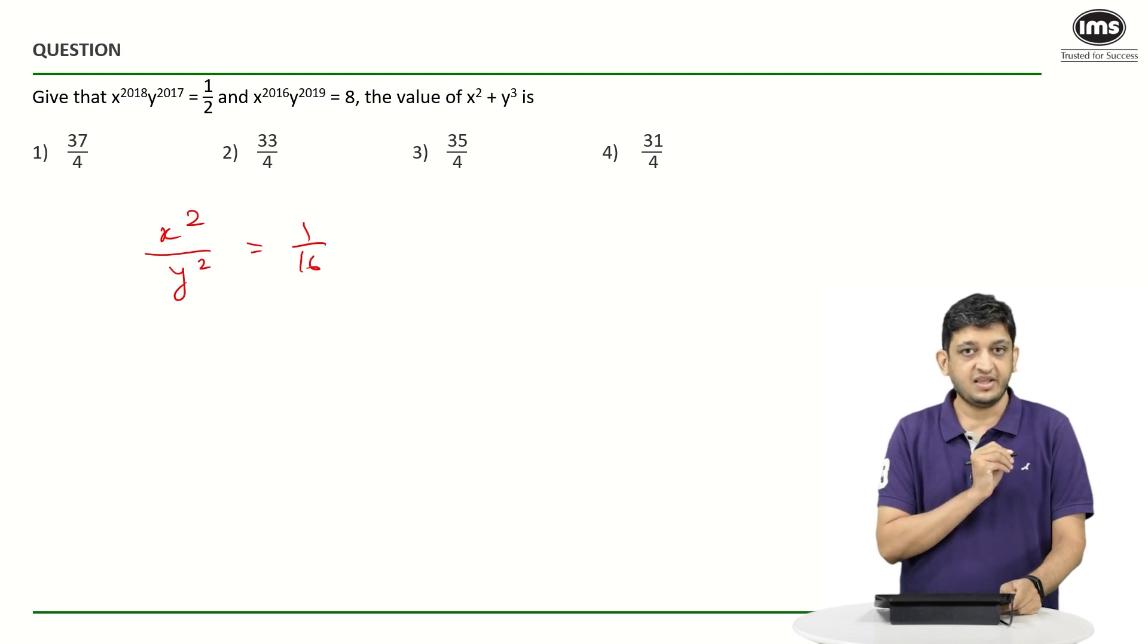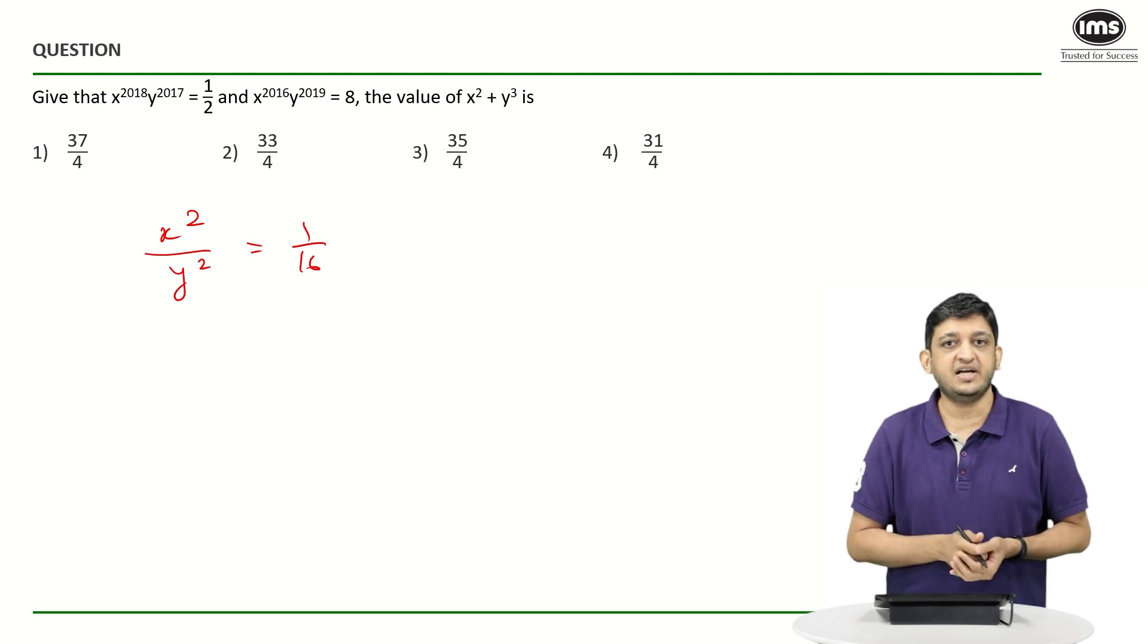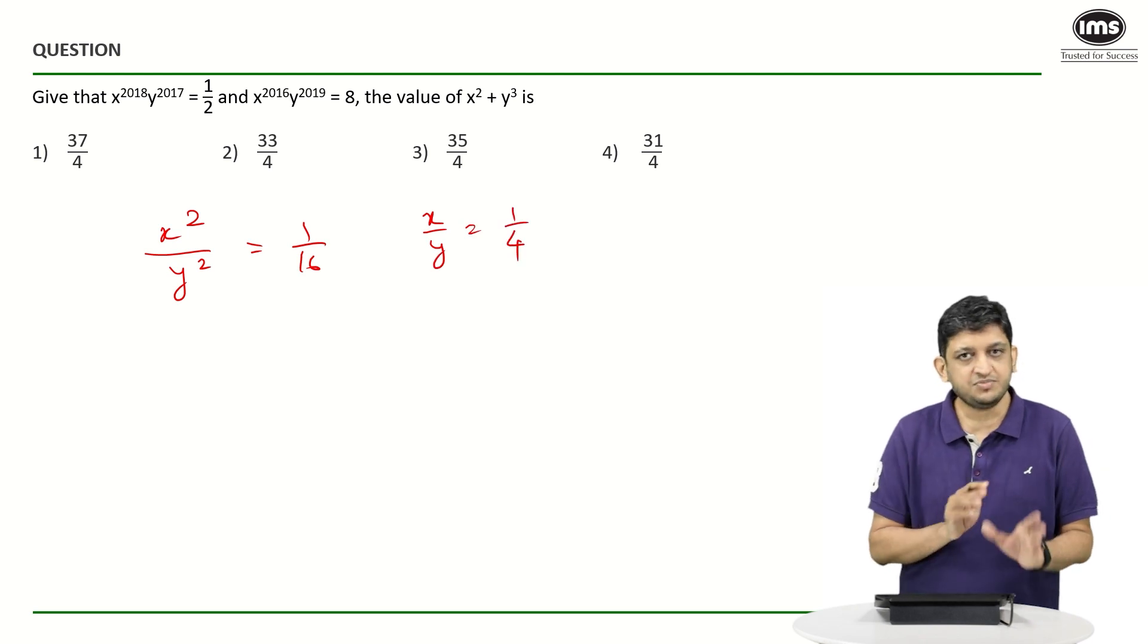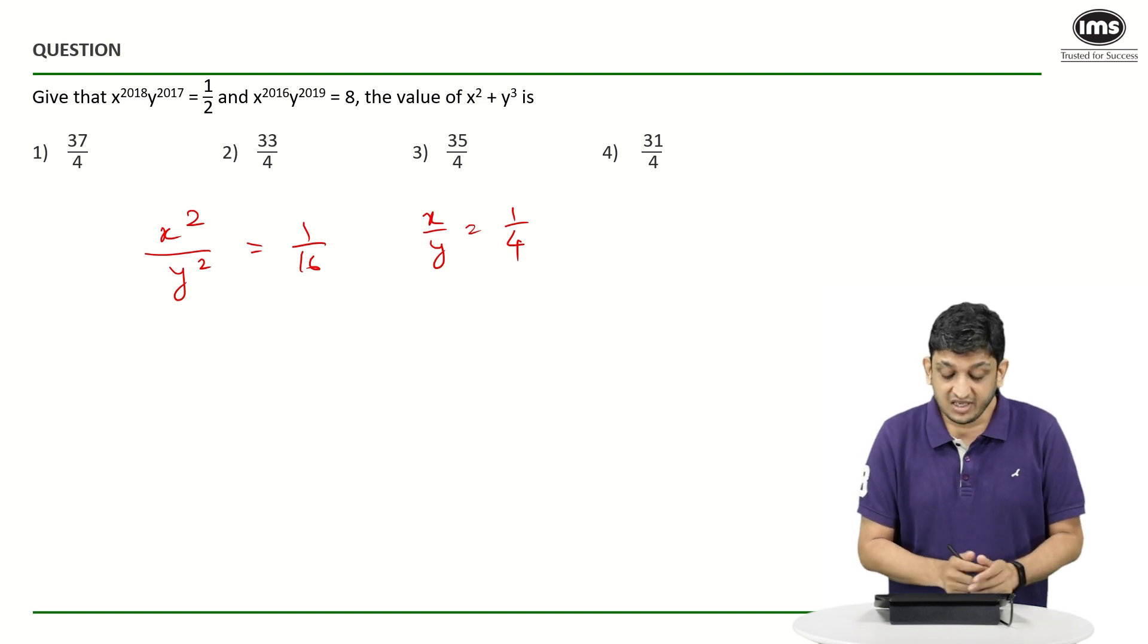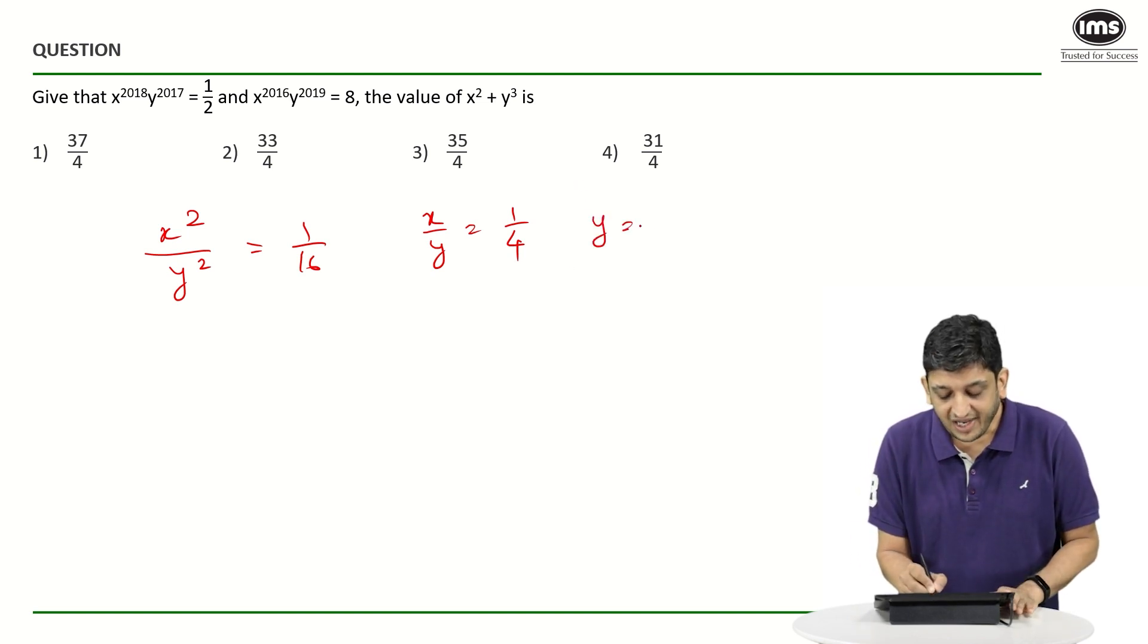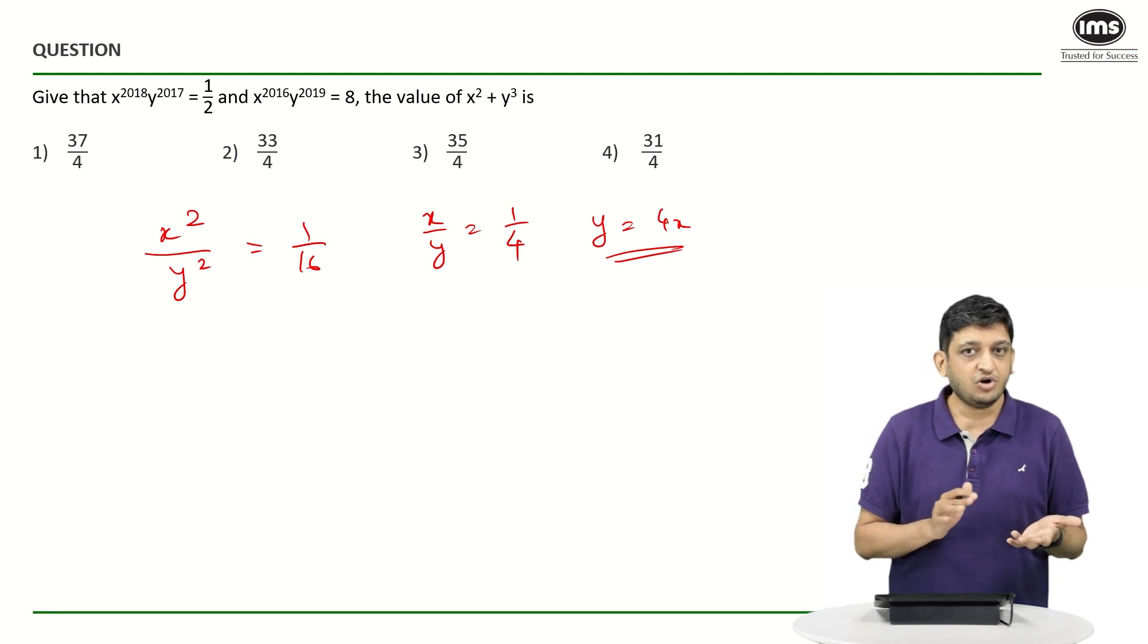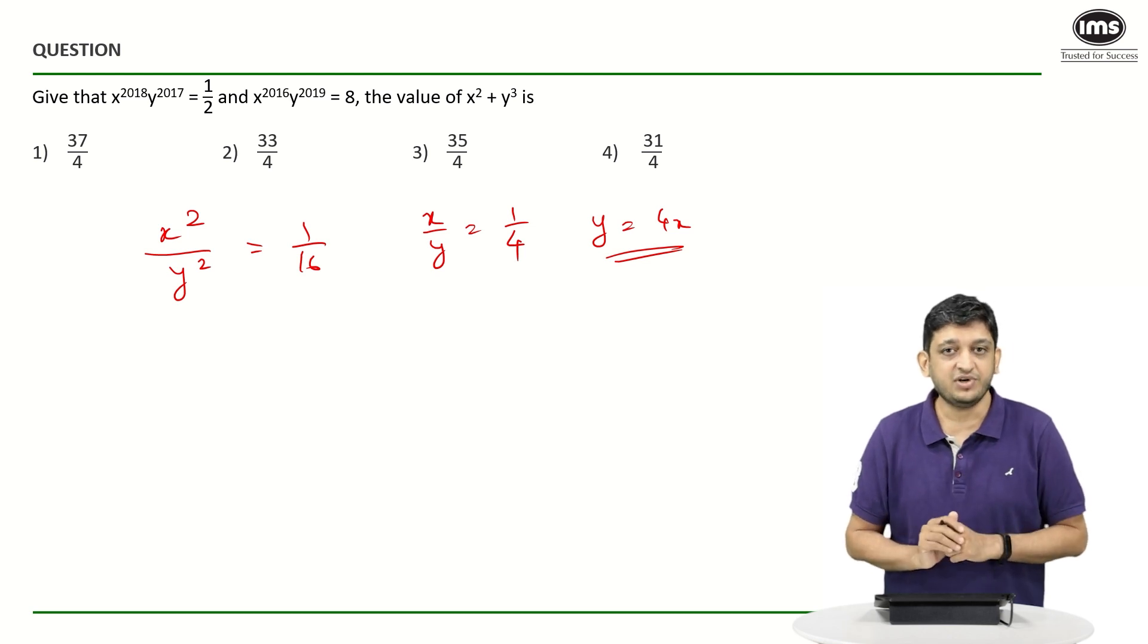Now what we can do in this case is we can express either X or Y in terms of the other variable. Here we can say that X by Y equals 1 by 4. So X by Y is 1 by 4, so you get the value of Y as 4X. Now obviously many of you would have thought that Y could be equal to either plus 4X or minus 4X, which is perfectly reasonable, and you can try that out in the replica question that has been attached at the end of this video.